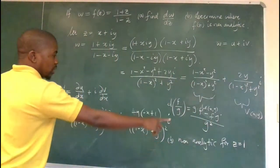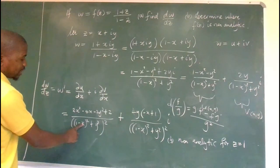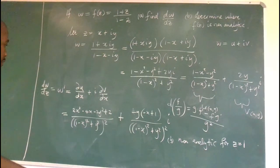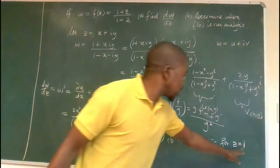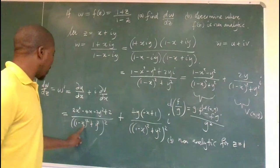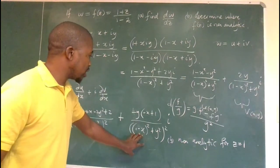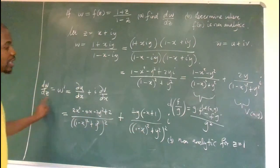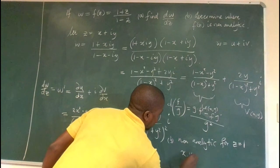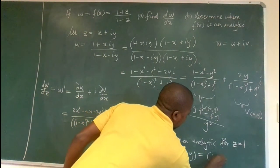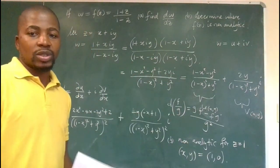Let's verify: at z = 1, x = 1 and y = 0. Plugging x = 1 into (1 − x)² + y² gives (1 − 1)² + 0² = 0, so the whole expression becomes undefined and the derivative does not exist. Therefore the function is non-analytic at the point (x, y) = (1, 0). That's the solution — thank you.